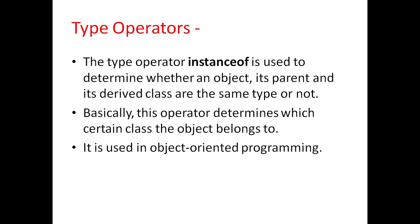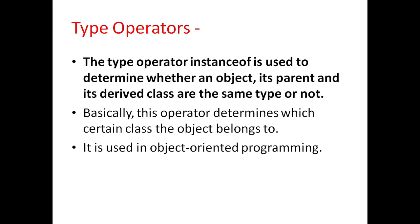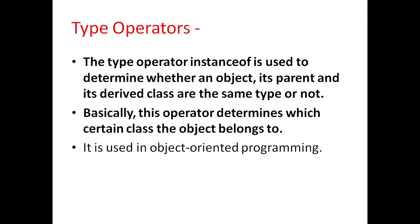Type operators. The type operator is used to determine whether an object, its parent, and its derived class are the same type or not. Basically this operator determines which certain class the object belongs to. It is used in object-oriented programming.